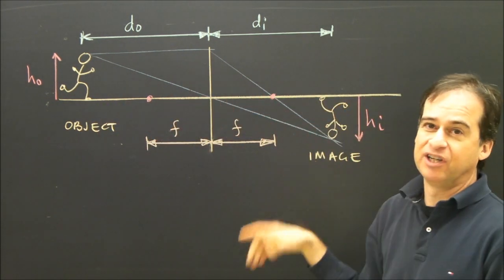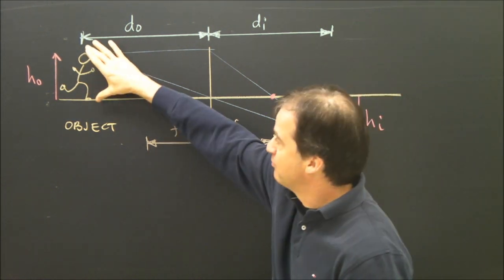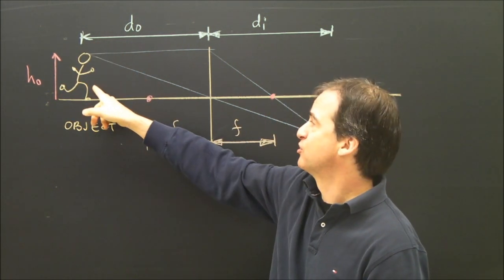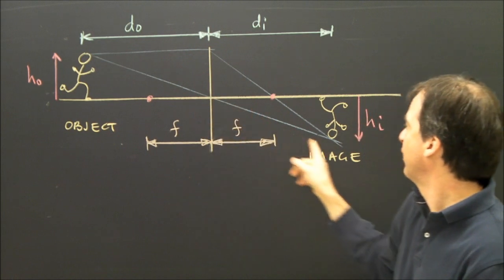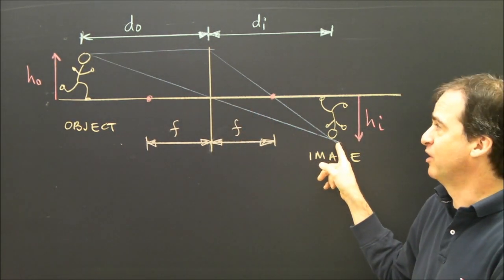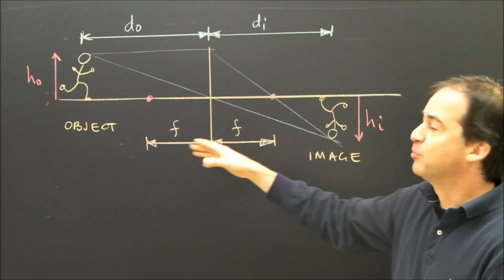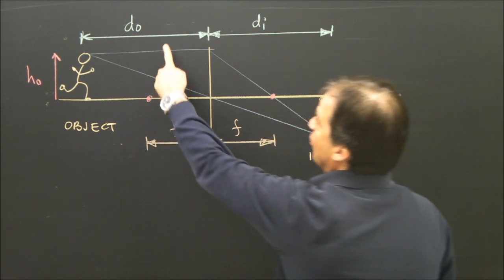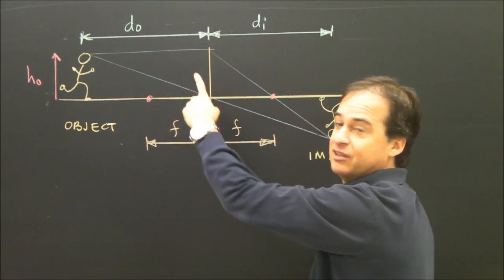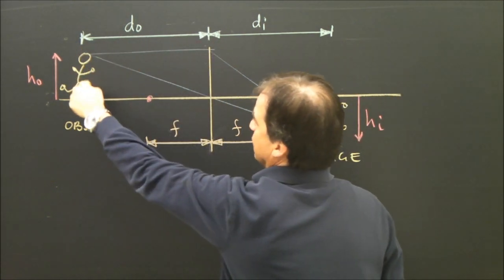We should just briefly look at what those variables mean pictorially. Here's a ray diagram for a converging lens. I have my object here, which is a person running, and I've drawn two of the rays to locate the image. So the variables on this diagram, DO is the distance to the object, the distance from the lens to the object, which is my person.